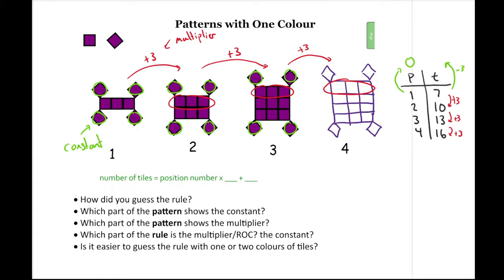If I reverse the pattern — seven minus three — I get four. So that's another way to see where our constant is. Going to our rule: number of tiles equals the position number times three plus four. Or you could write it as y equals 3x plus four. Or if you don't like y and x, you could say the number of tiles is equal to three times the position number plus four. It might be easier to use letters rather than writing out these full phrases every time.